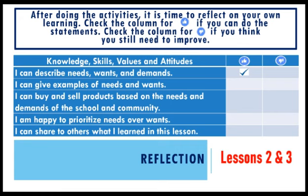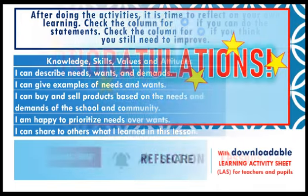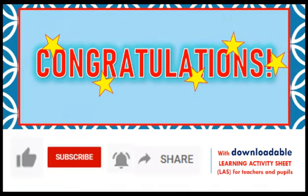After doing the activities, it is time to reflect on your own learning. Check the column for thumbs up if you can do the statements. Check the column for thumbs down if you think you still need to improve. For example, the first statement is: I can describe needs, wants, and demands. If you think you can do this, put a check on the thumbs up column. If you think you still need to improve, put a check on the thumbs down column.